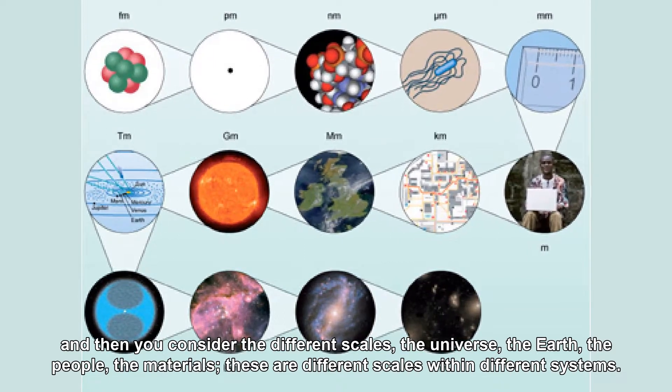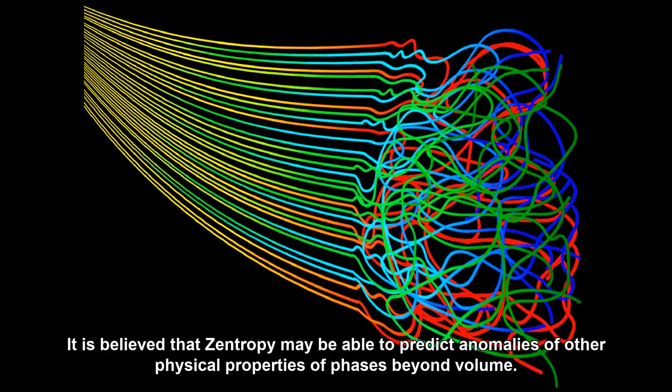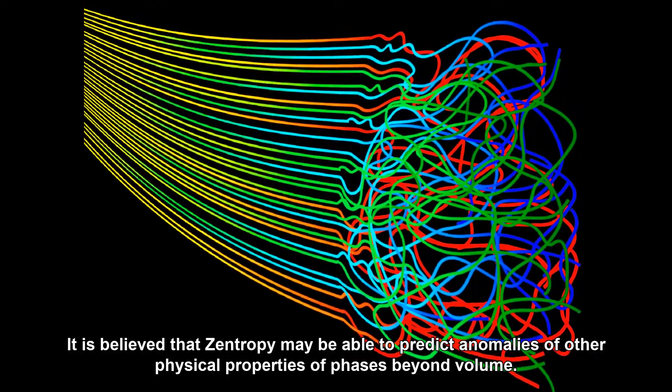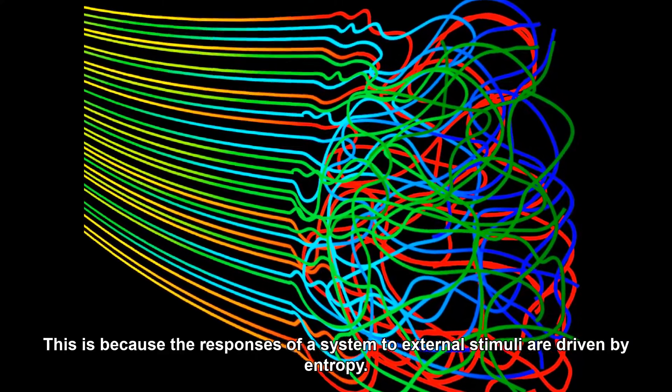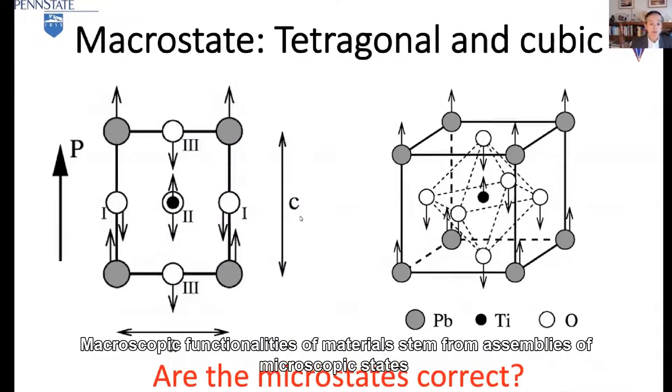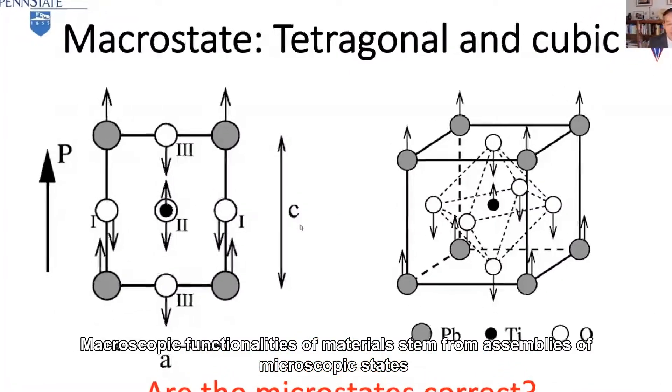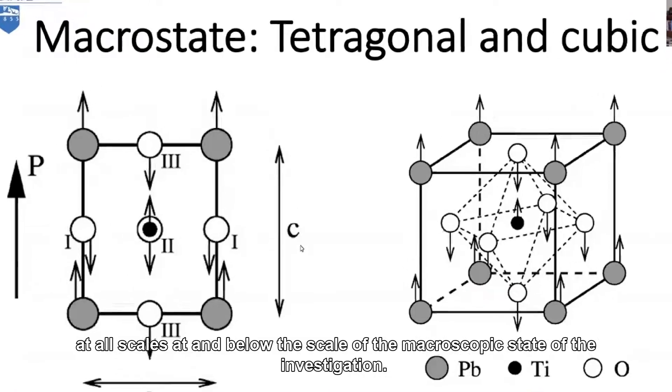It is believed that Zentropy may be able to predict anomalies of other physical properties of phases beyond volume. This is because the responses of a system to external stimuli are driven by entropy. Macroscopic functionalities of materials stem from assemblies of microscopic states at all scales and below the scale of the macroscopic state under investigation.